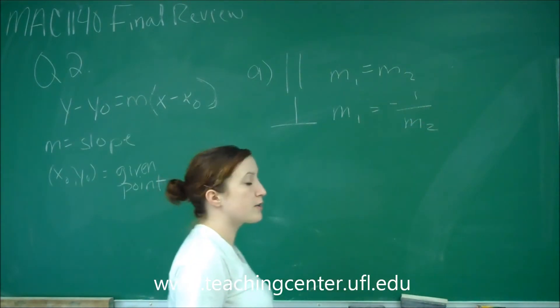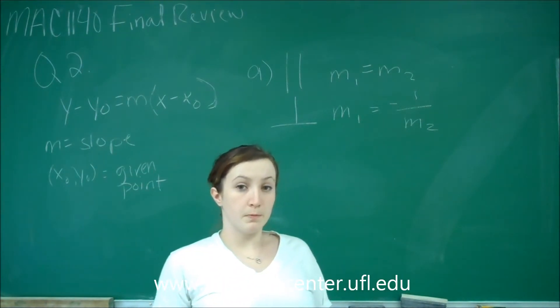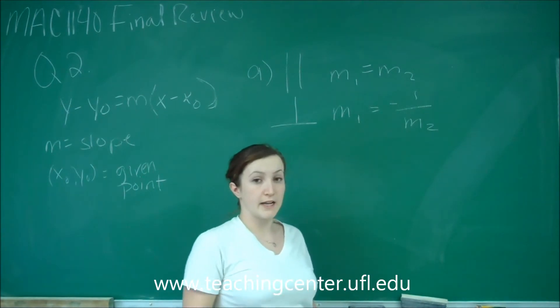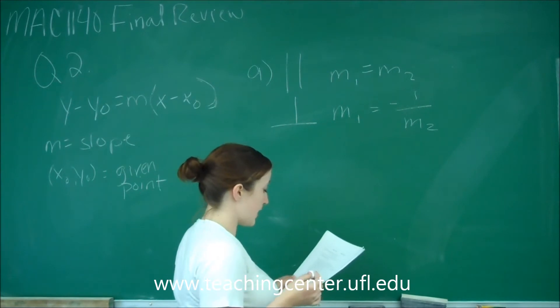So if we know the slope of one line and it wants us to find the slope of a line perpendicular to that, we would take our slope, negate it, and flip it over one. So that is part a.